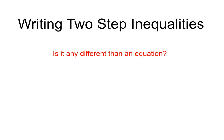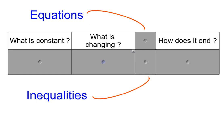This video helps us understand how to write two-step inequalities. Before we get into that, we'll address the question: is it any different than writing an equation? Let's take a look at what's involved with writing an equation, then we'll look at it from the point of view of an inequality. When writing an equation, we have two things: what is constant and what is changing, and then how it ends on the other side with an equal sign.